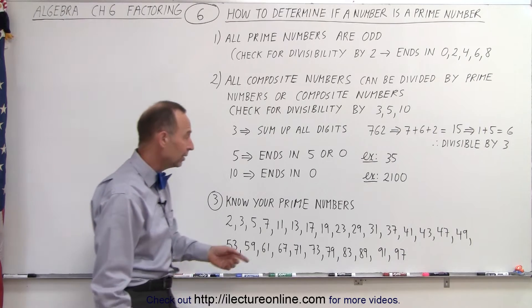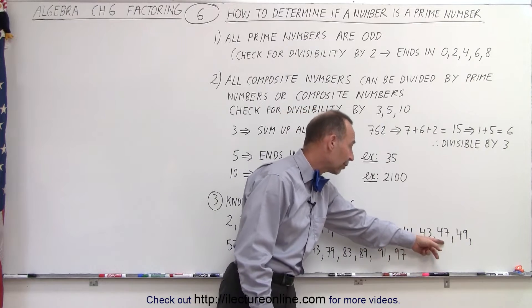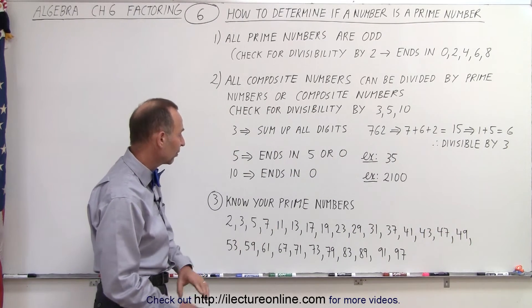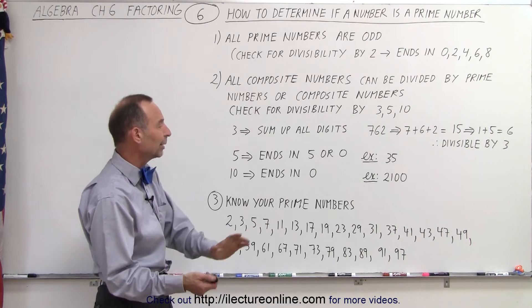Then if we continue on, we have 23, 29, 31, 37, 41, 43, 47, and 49. Then we have 53, 59, 61, 67, 71, 73, 79, 83, 89, 91, and 97.